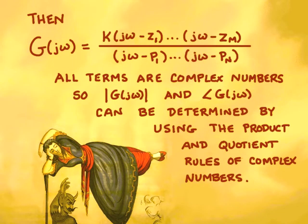Then the frequency response of the transfer function, g of j omega, can also be written as the combination of terms in the numerator and the denominator, where we've taken s and replaced it by j omega. Now all these terms in the numerator and denominator are complex numbers, and so the magnitude and phase of g of j omega can be determined by using the product and quotient rules of complex numbers.